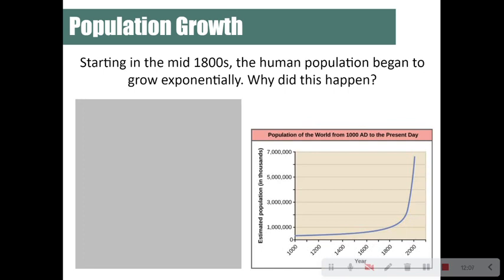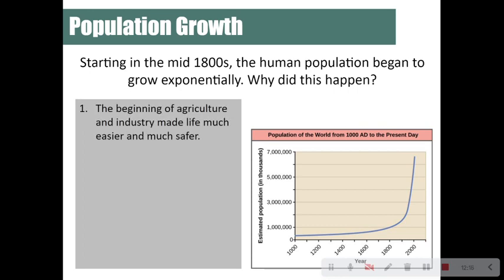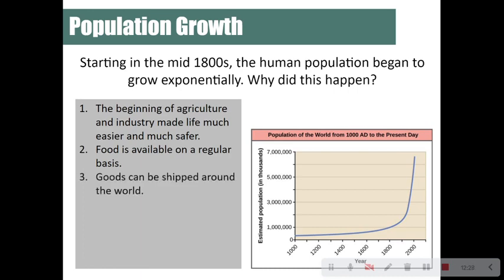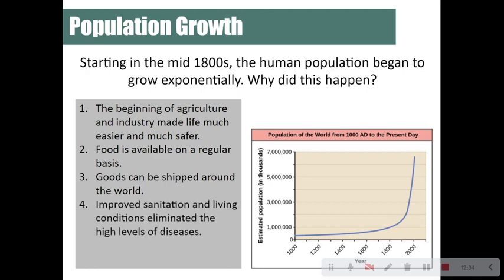Starting in the mid-1800s, the human population began to grow exponentially. The beginning of agriculture and industry made life much easier and safer — food was more available on a regular basis, goods could be shipped around the world, and there was improved sanitation and living conditions that eliminated high levels of disease. As the death rate dropped while the birth rate increased, life improved dramatically, which is why we see this rapid increase in population.